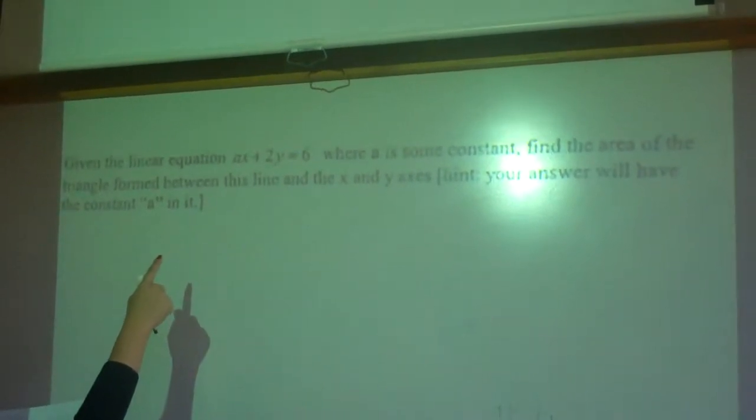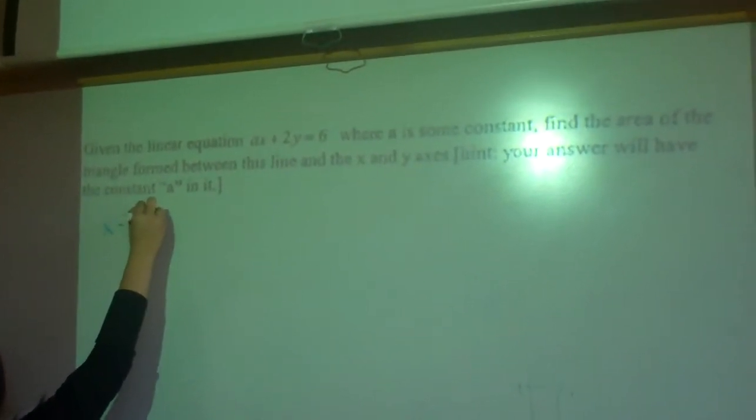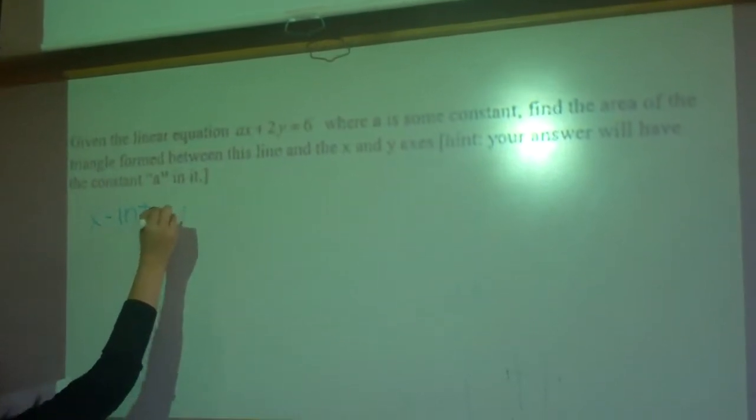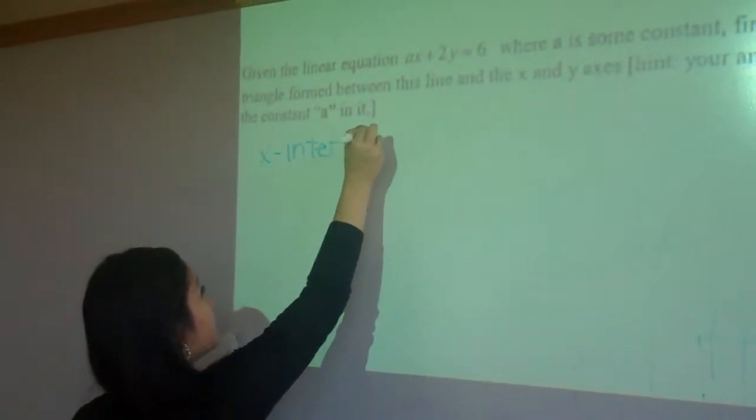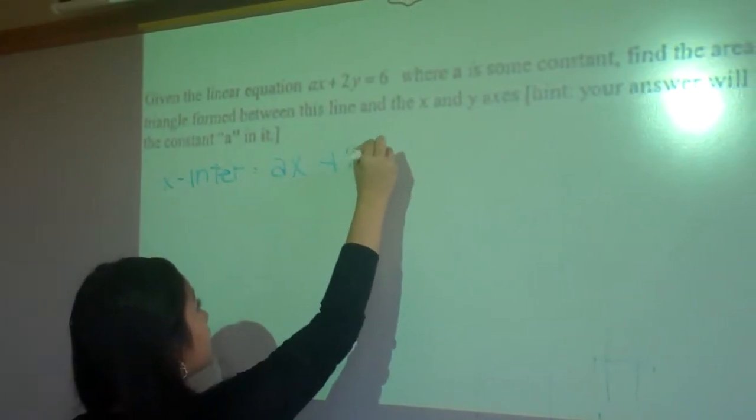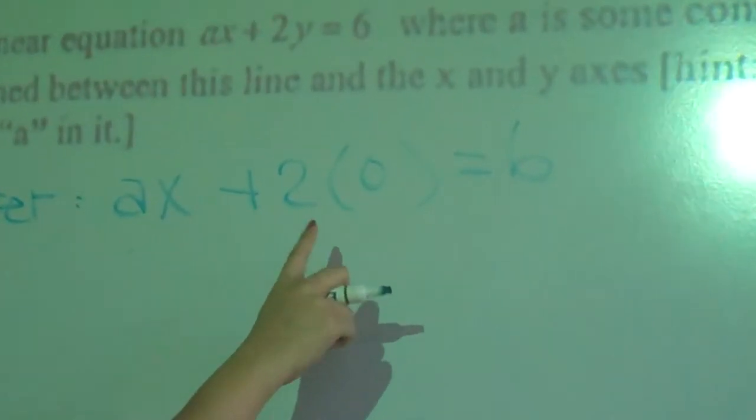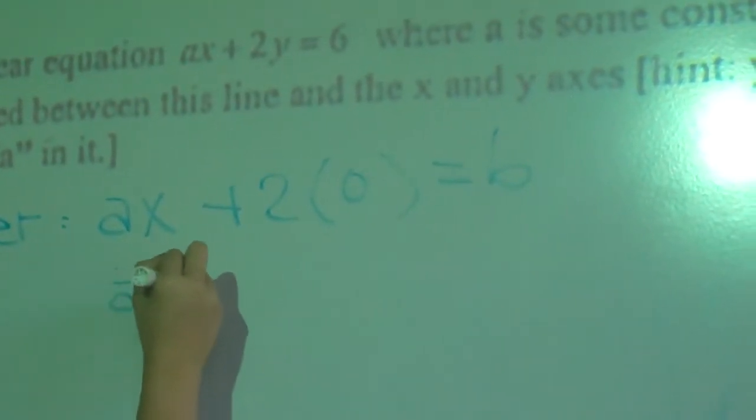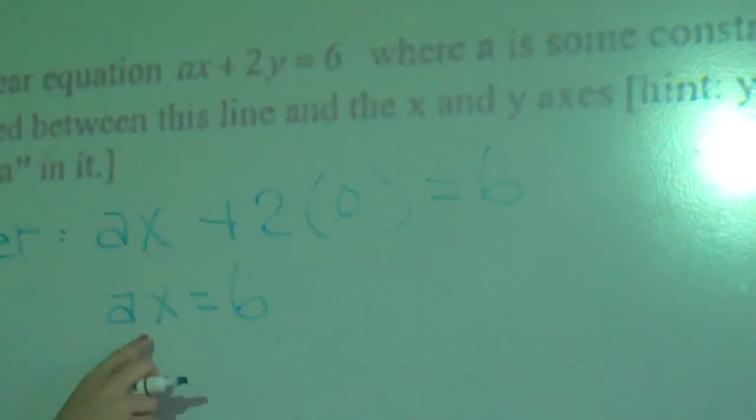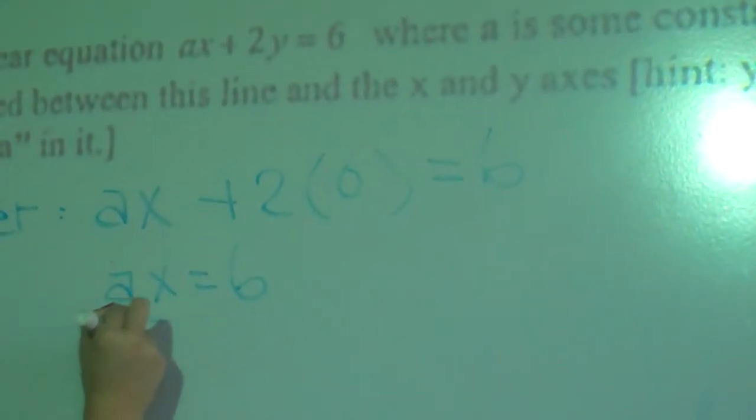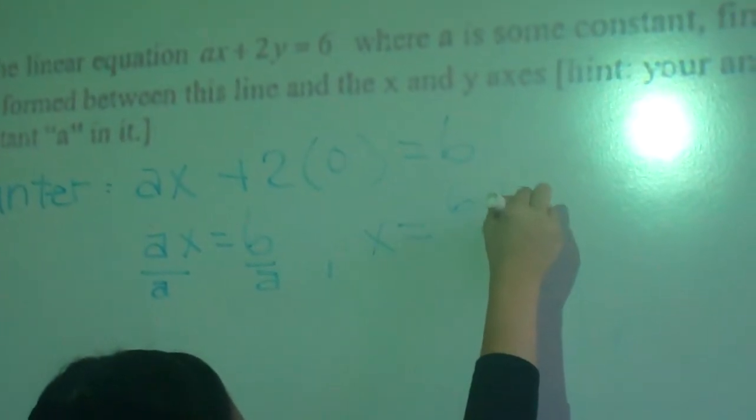So first, we know this equation and we are looking for the x-intercept. We know that the x-intercept is found by setting y equals 0, so it would be like this. And we know that anything times 0 is 0, so this would be ax equals 6. And then we want to isolate the x, so we divide by a, giving us x equals 6 over a.